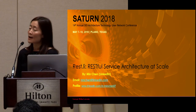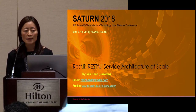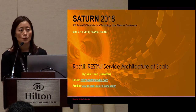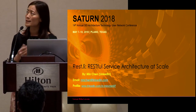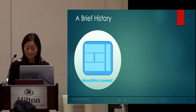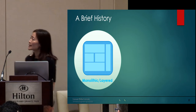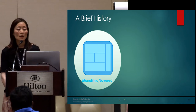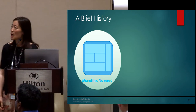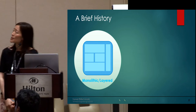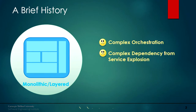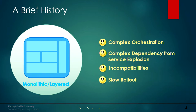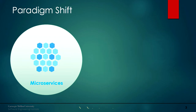Rest.li is a RESTful service architecture developed at LinkedIn and open sourced. Together with its powerful ecosystem tools, we have successfully transformed LinkedIn from a legacy application to a modern service-oriented architecture at scale with thousands of services. Before Rest.li was born, like many other organizations, LinkedIn also had this monolithic layered architecture. With service explosion and quick iteration, the shortcomings became more and more obvious — complex orchestration, complex dependency, constant integration test failures due to backward incompatibility, and a very slow rollout for every feature.